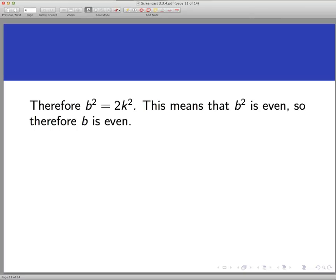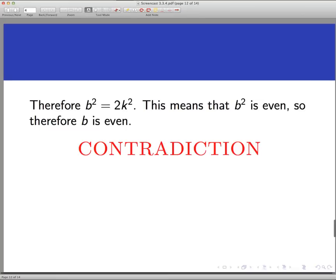Now, that implies that b squared is even, because I've written it as 2 times an integer. Using the result from screencast 3.2.1, I can now say that b is even. But wait, this is a, wait for it, it's a contradiction. Now, if it seems like this contradiction comes out of nowhere, I don't blame you. What exactly did we contradict?